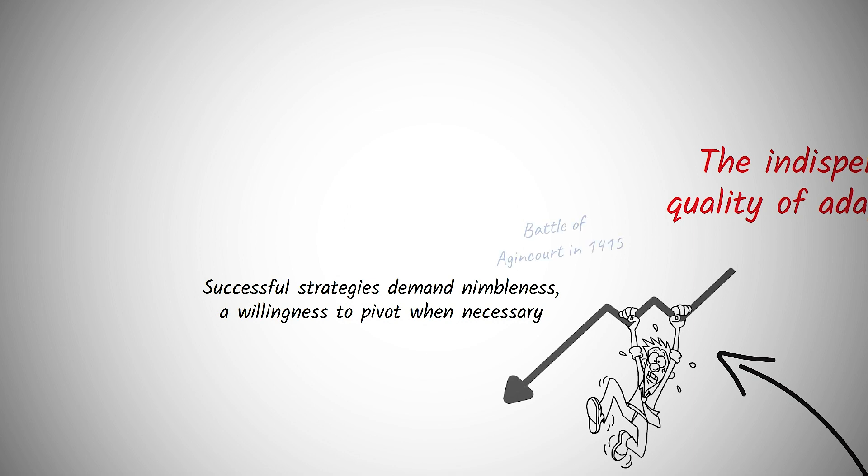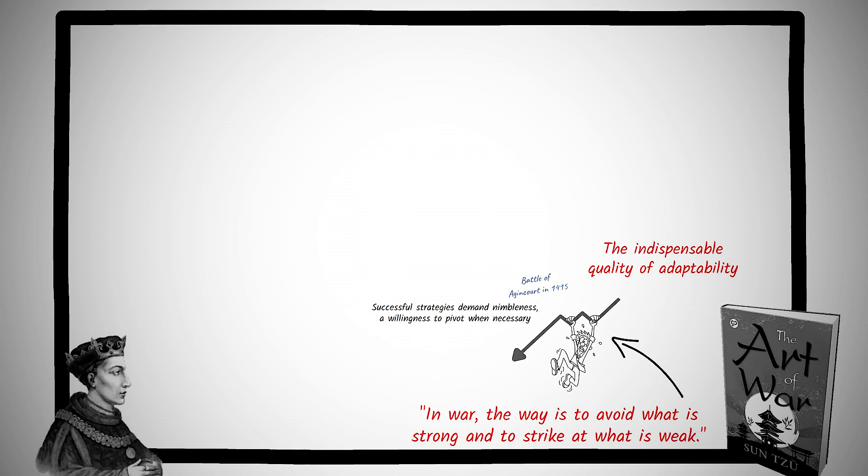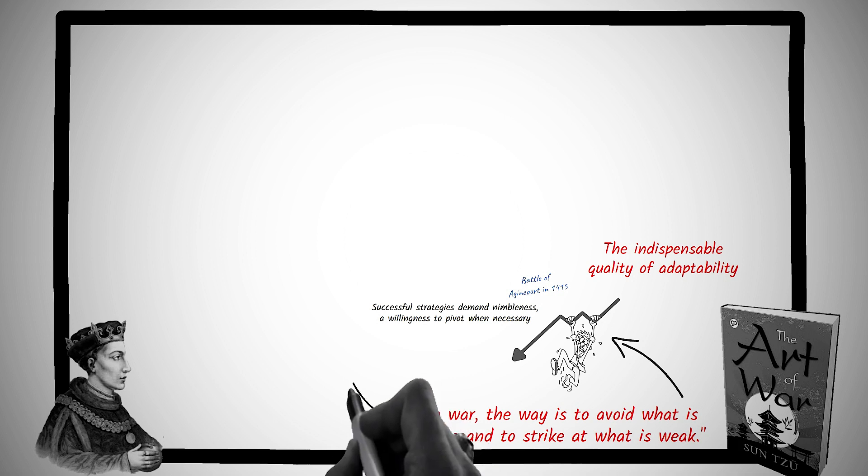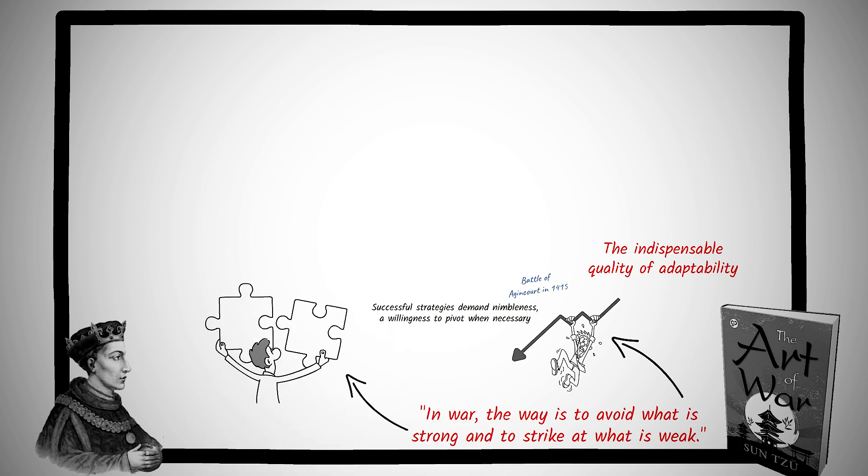The historic Battle of Agincourt in 1415, part of the larger backdrop of the Hundred Years' War, saw King Henry V of England and his forces cornered on foreign soil, grossly outnumbered by the French. Yet, it was in this dire scenario that strategy and adaptability became their lifeline.